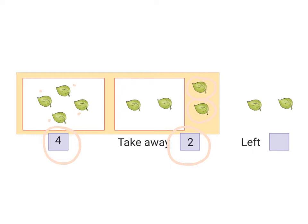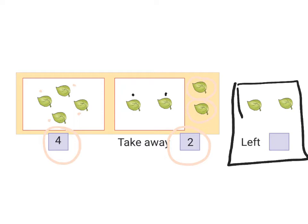So how many leaves are left now in the box? There are only 1 and 2. That's right, so there are just 2 leaves left in the box.